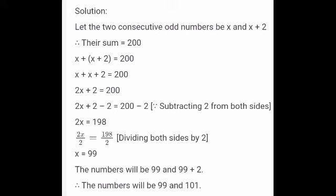So, x is equal to 99. What is the other number? That is x plus 2. So, add 99 plus 2 — we get the answer 101. Therefore, the two numbers are 99 and 101. When we add these two numbers, we get 200. Therefore, the two consecutive odd numbers are: first number is 99 and the second number is 101.